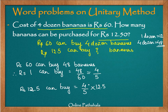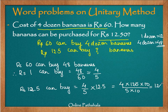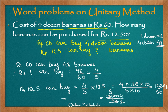To simplify, we multiply both numerator and denominator by 10. So we get 4 multiplied by 125 divided by 50. This gives us 500 divided by 50. We can see that 125 and 50 share a factor of 25: 25 times 5 is 125 and 25 times 2 is 50. Simplifying further by dividing by 2, we get 5 times 2 equals 10 bananas. Therefore, 12.5 rupees can buy 10 bananas.